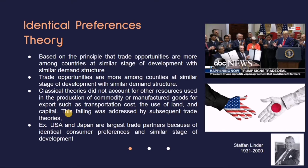The problem with classical theories is that they did not cover the factor of what stage of development a country is at. There are certain stages or levels — upper, middle, or bottom — like third world versus first world countries. Countries at the same stage are most likely to trade because they share the same demand structure. Japan and the US are the largest trade partners because of their identical consumer preferences and similar stage of development — they are both first world, superpowers that prefer quality products.